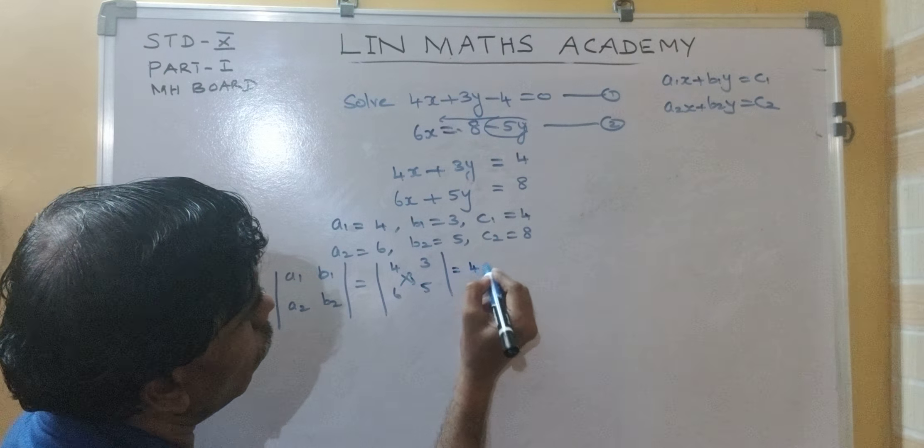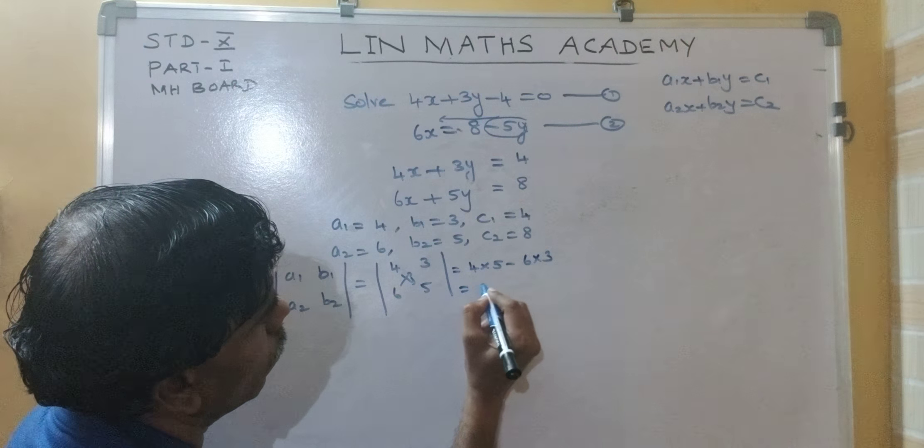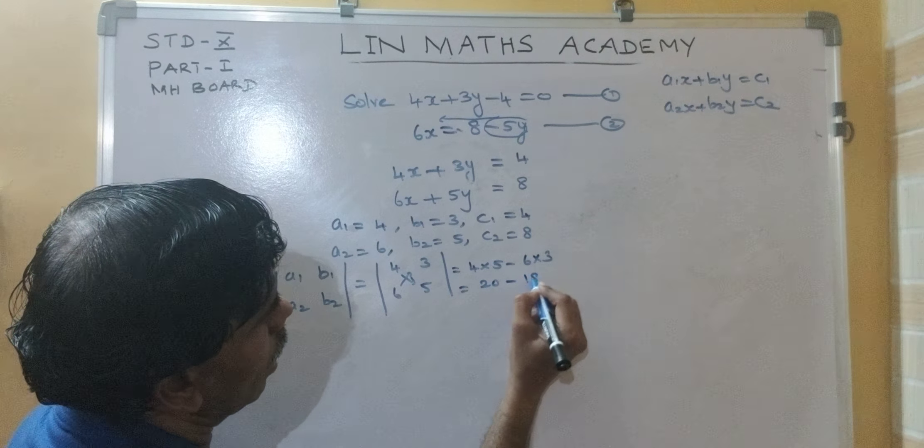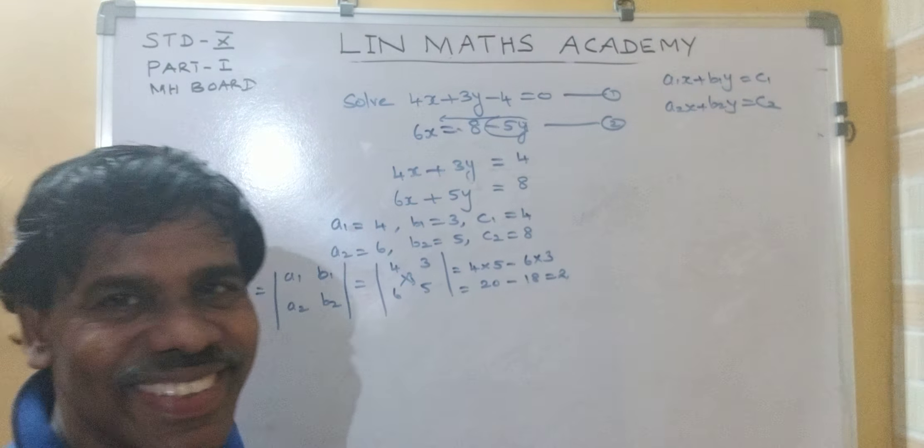So, 4, 5 cross multiply minus 6, 3 cross multiply. So, 20 minus 18 equal to 2, followed?